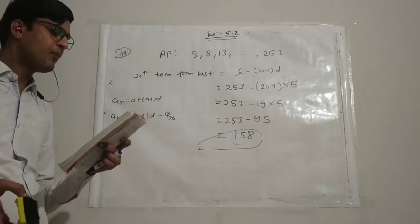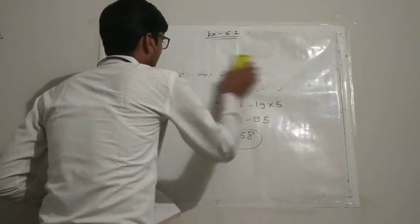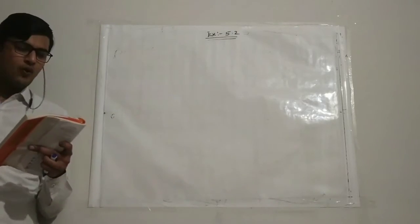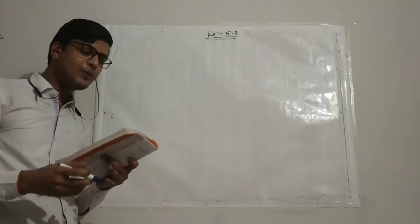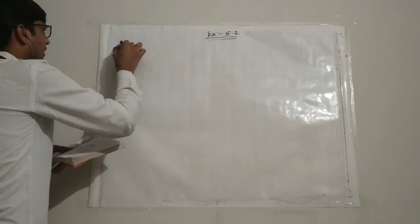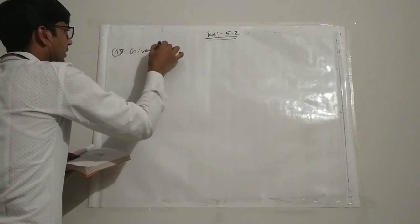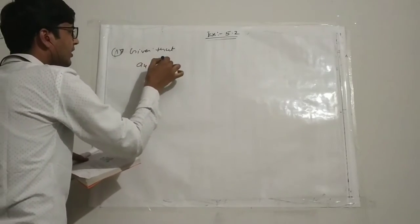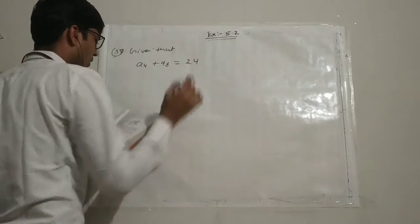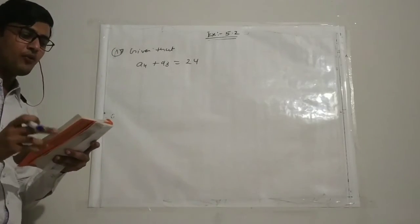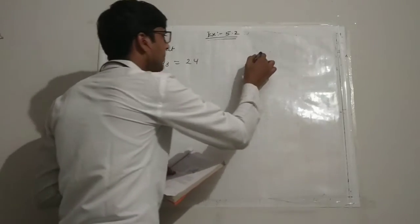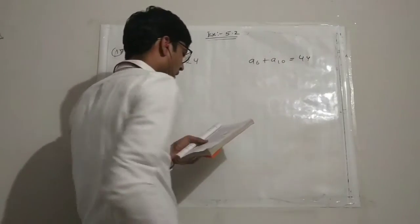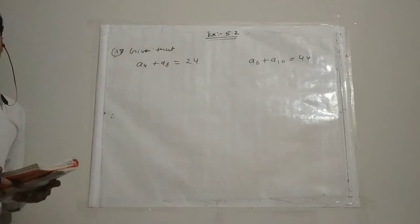Question number 18: The sum of the 4th and 8th term of an AP is 24, and the sum of the 6th and 10th term is 44. Find the first three terms of the AP.